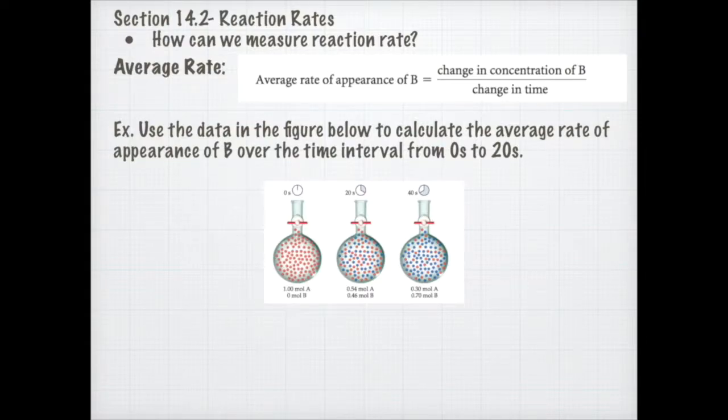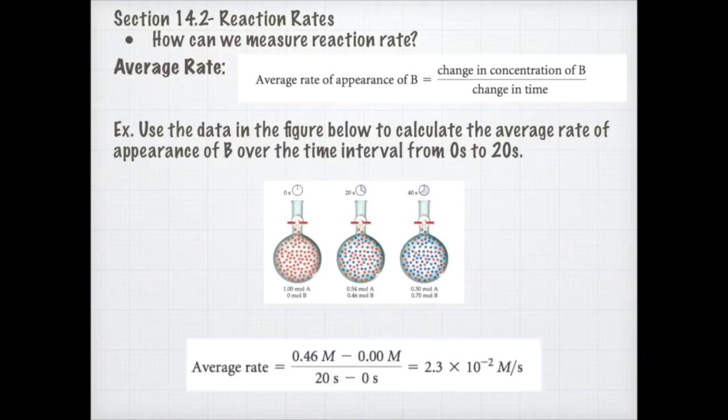If you look at this diagram right here, it asks us to use the data in order to calculate the average rate of appearance of B from zero seconds to 20 seconds. I'm going to look at the final concentration of B, which is 0.46 molar minus zero molar, divided by 20 seconds minus zero seconds. What I get for my average rate is 2.3 times 10 to the negative second molar per second.